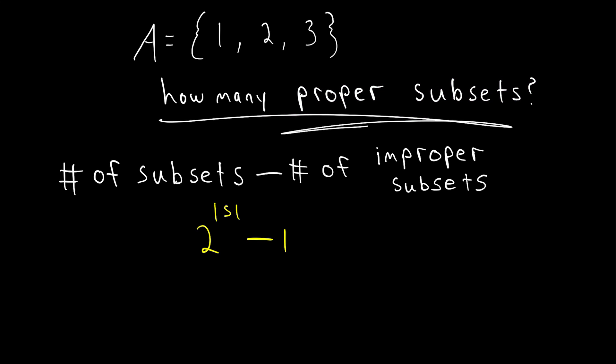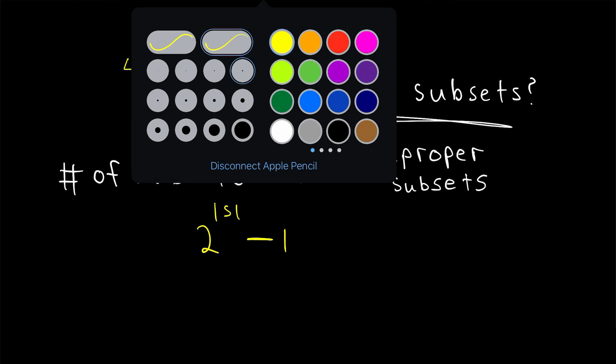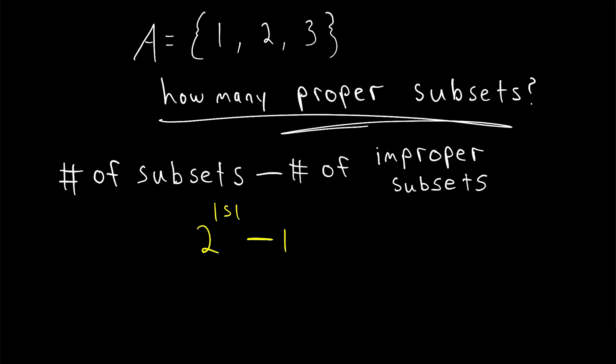And if a set is infinite, then it's going to have infinitely many subsets and infinitely many proper subsets. So I hope this video helped you understand how to find the number of proper subsets of any given set. Just for an example to wrap things up: how many proper subsets does our set A have? Well, the cardinality of A is three, so we know it has two to the power of three total subsets. Subtract the set A from that count because it's an improper subset of itself, and this is equal to eight minus one, or seven.